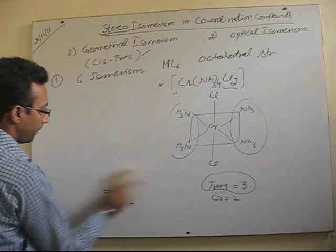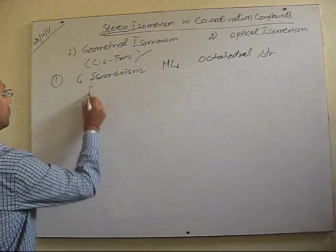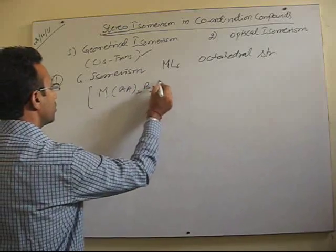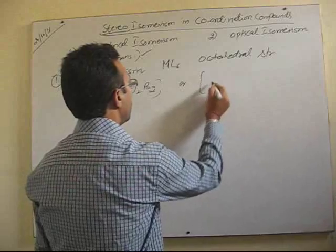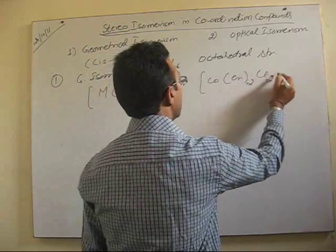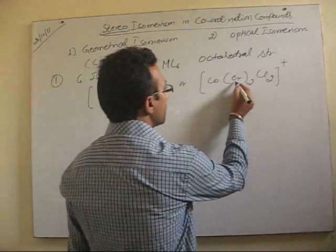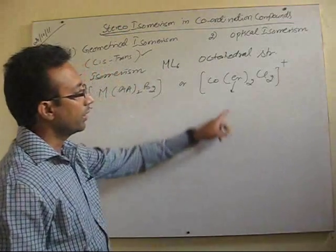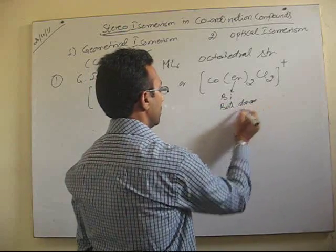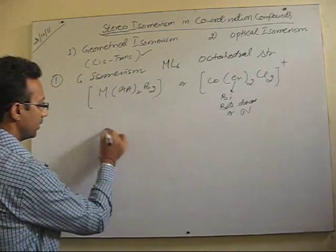So, let me take the second one in the octahedral complexes. The second type is MAA twice B2 type. Let me take one complex of cobalt here in plus 3 oxidation state. It is cobalt EN twice Cl2 plus. Now, this particular complex of cobalt, there is present EN. So, ethylene diamine, it is a bi-dentate ligand and both donors are nitrogen.